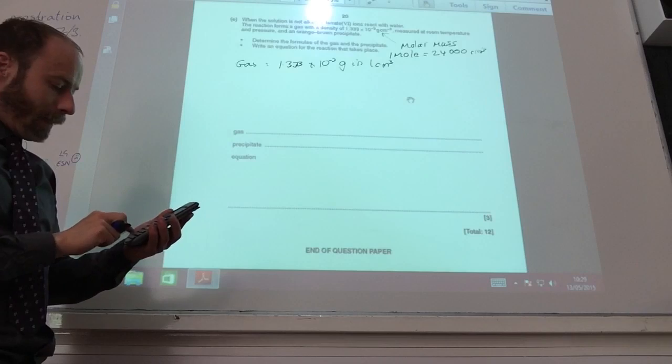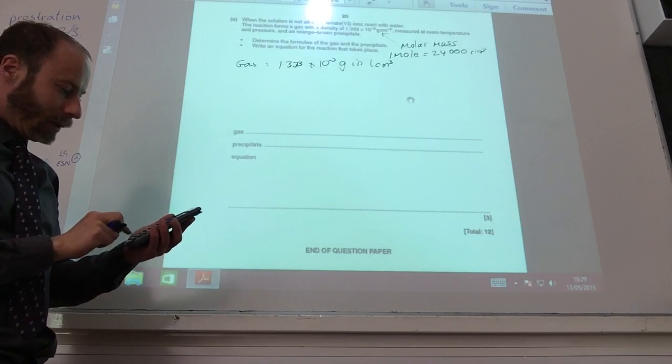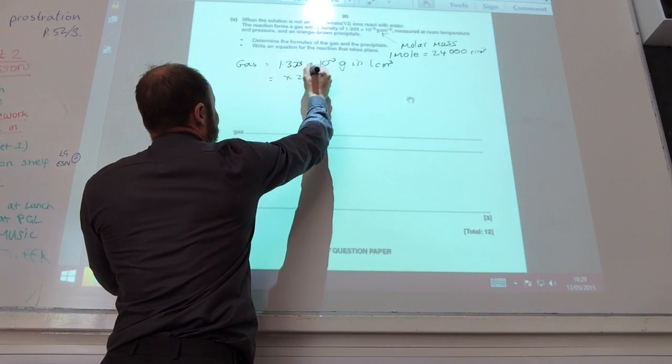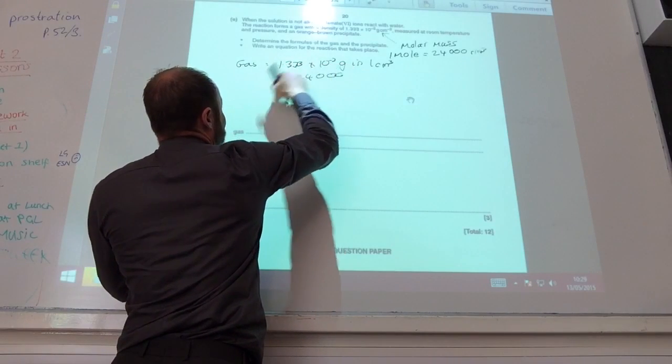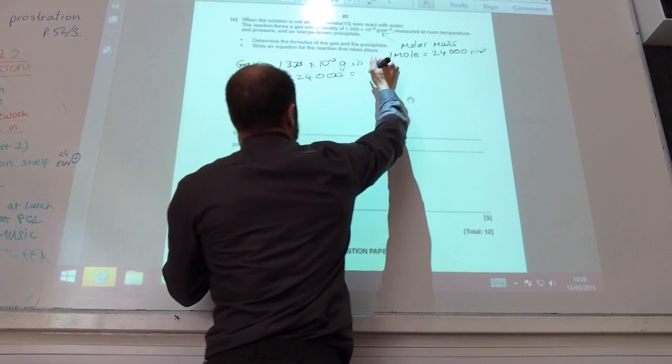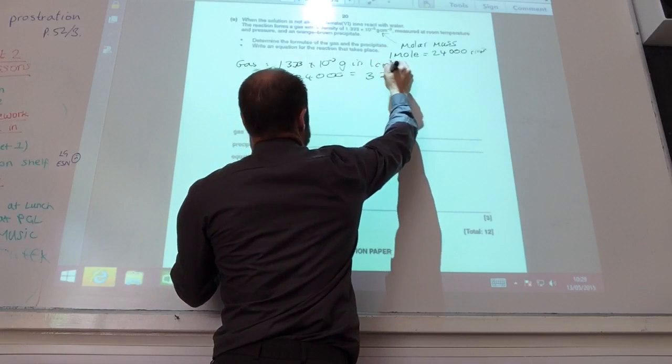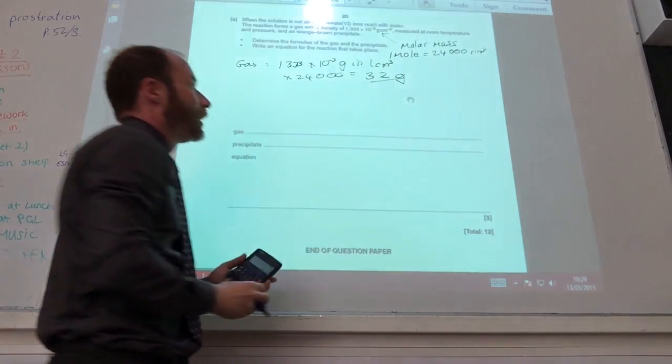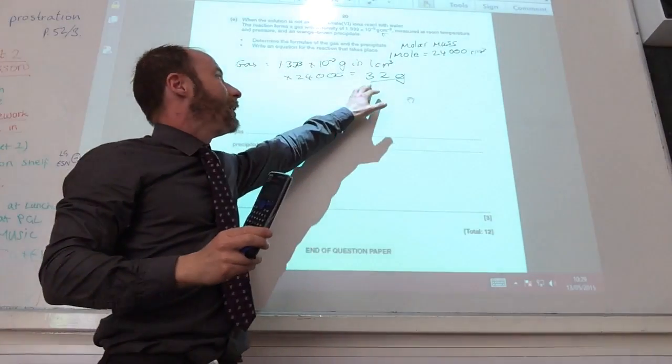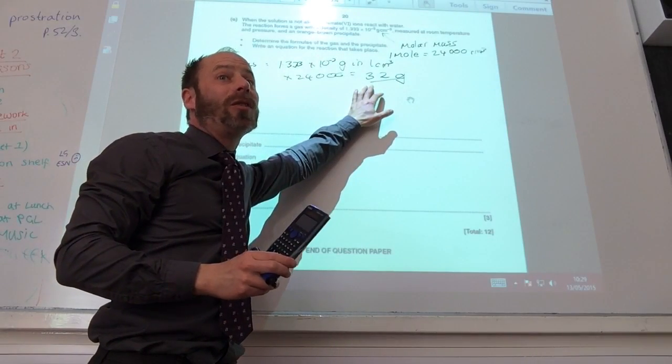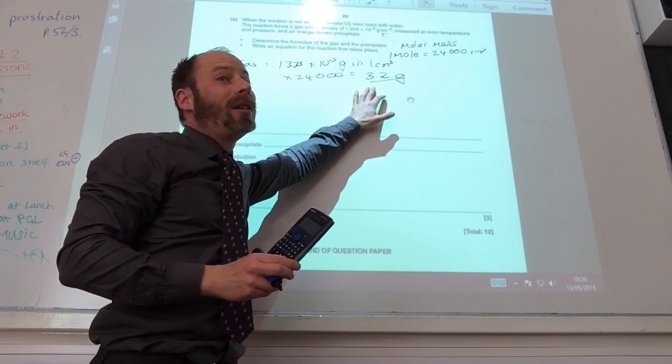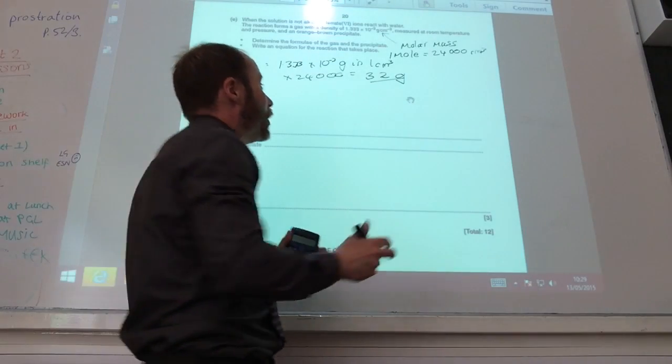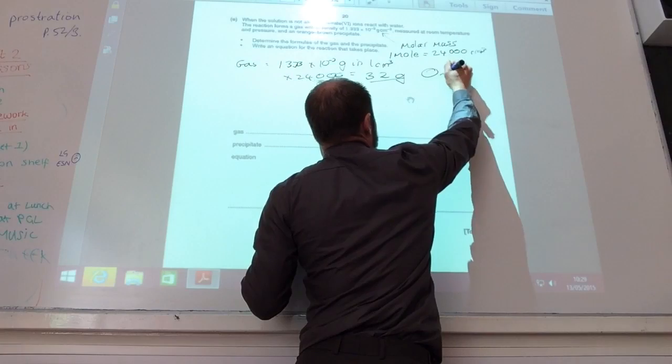So if in my gas I have 1.333 times 10 to the minus three grams in one centimeter cubed, if I times that number by 24,000, it comes to 32 grams. So what could it be? Looking at the elements that I've got involved, it's likely to be O2.